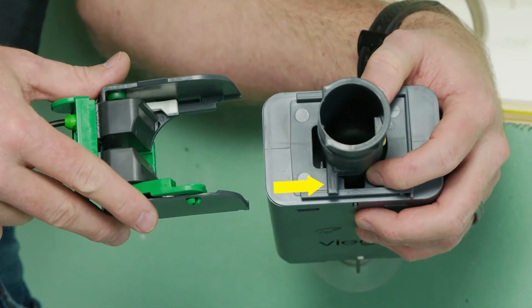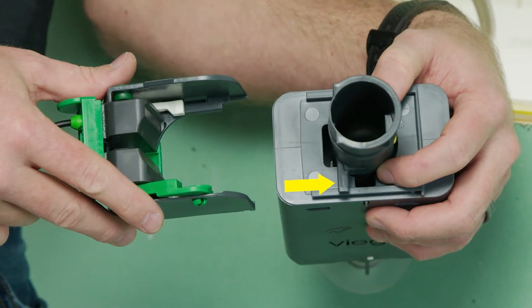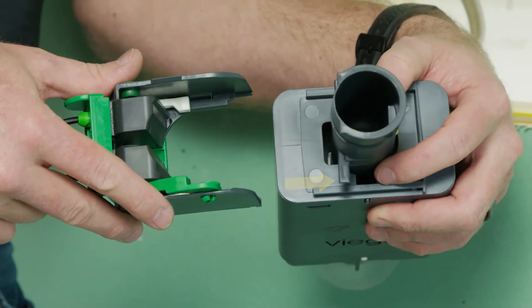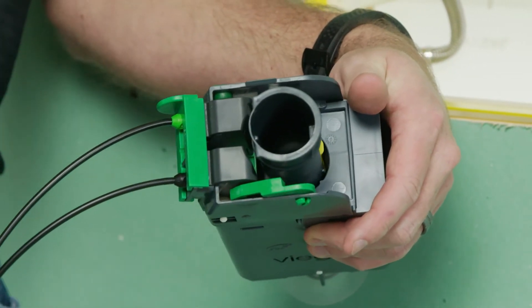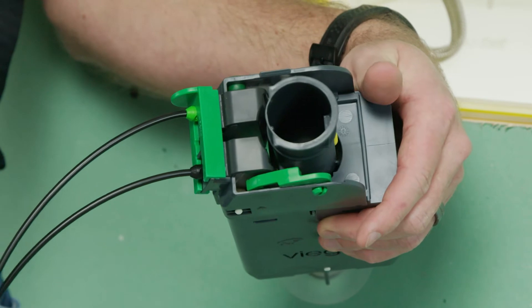Line up the tabs on the center portion with the levers on the Bowden cable unit. While holding the flush valve by the rectangular portion, the Bowden cable slides onto the top of the flush valve and clips into place.